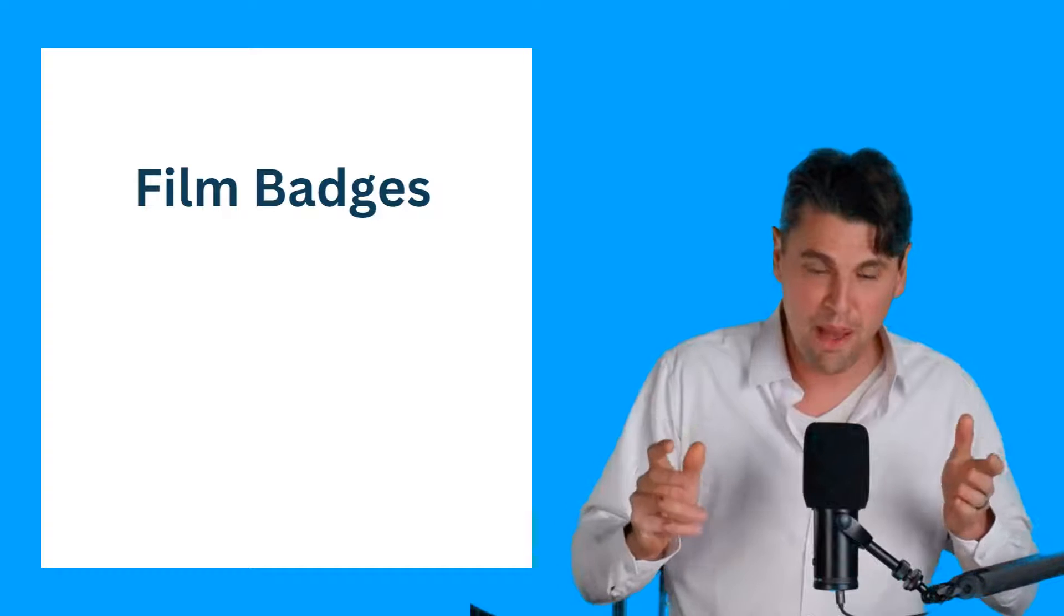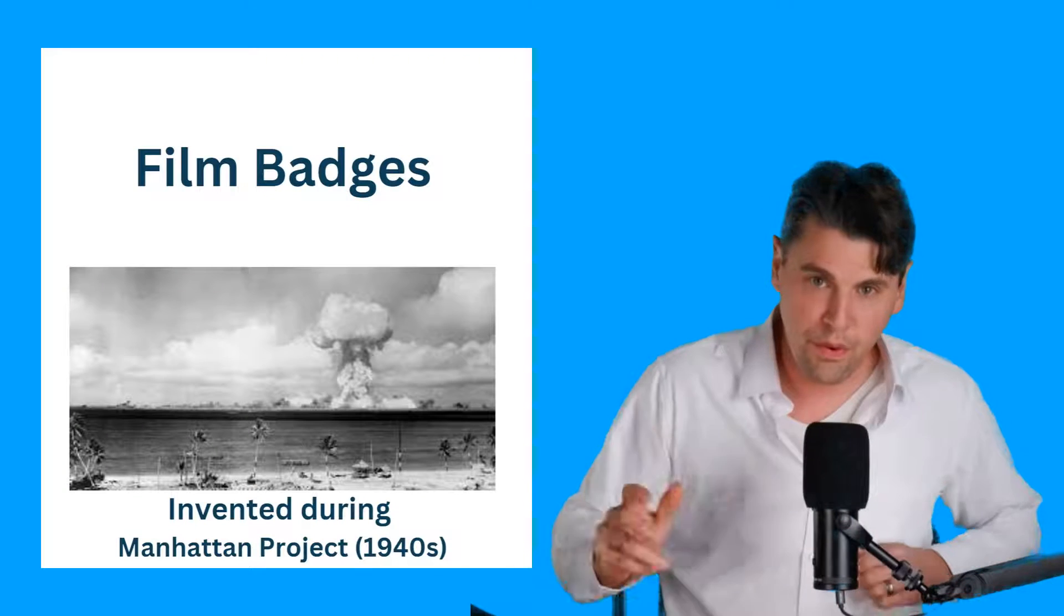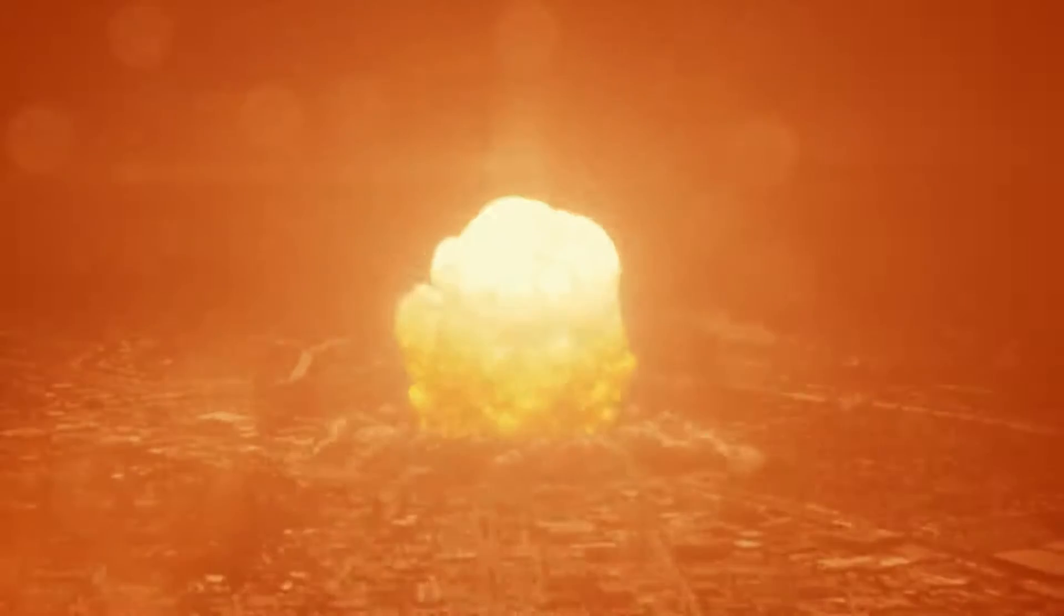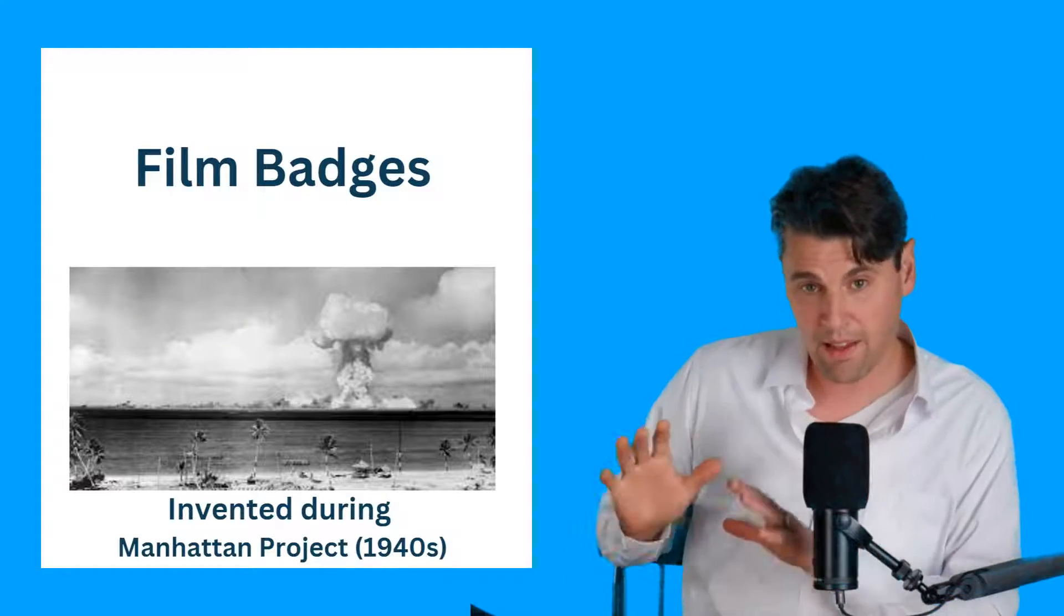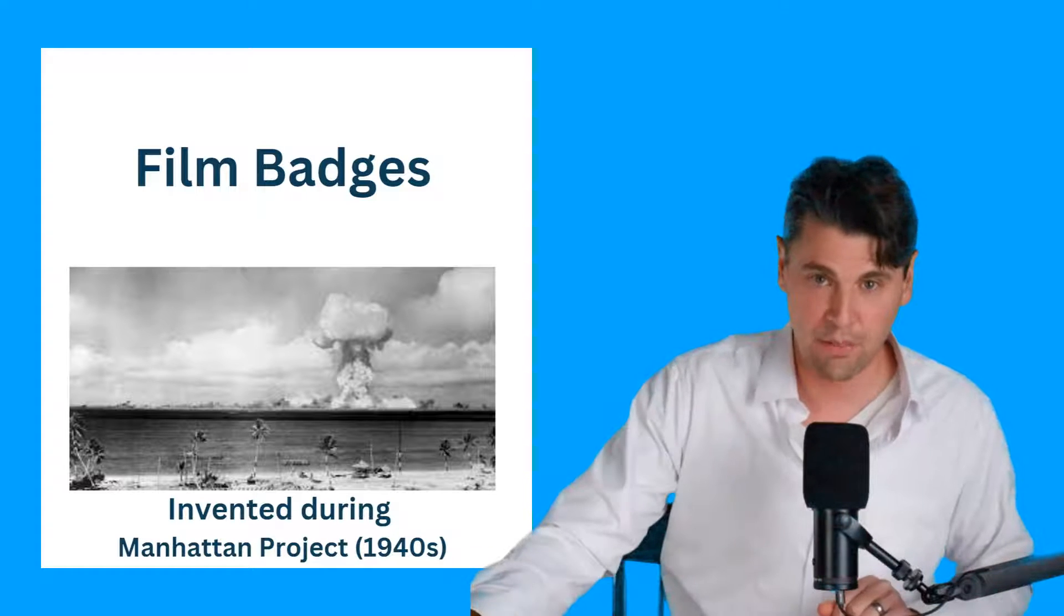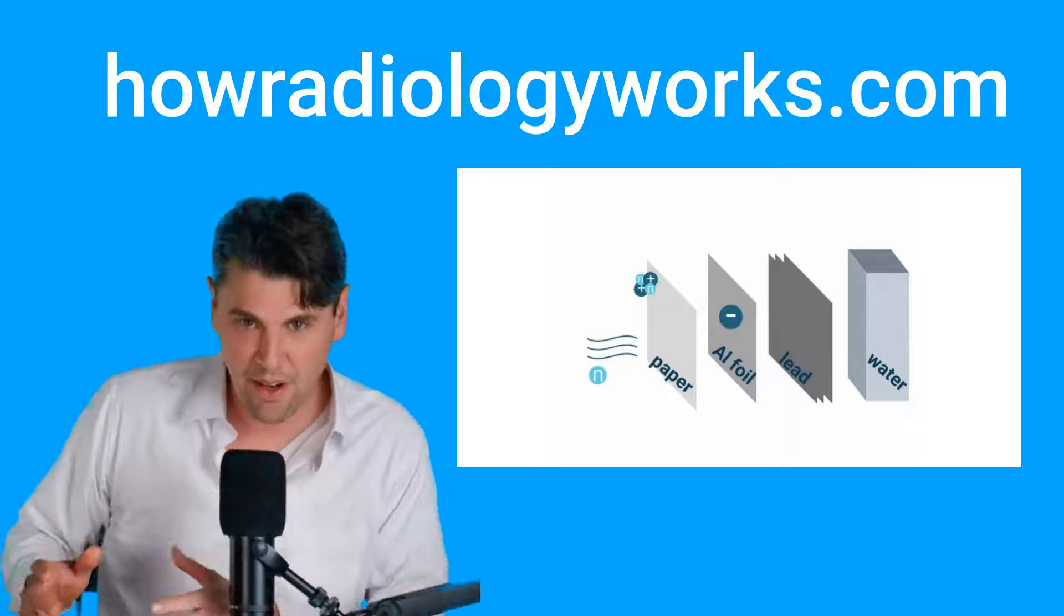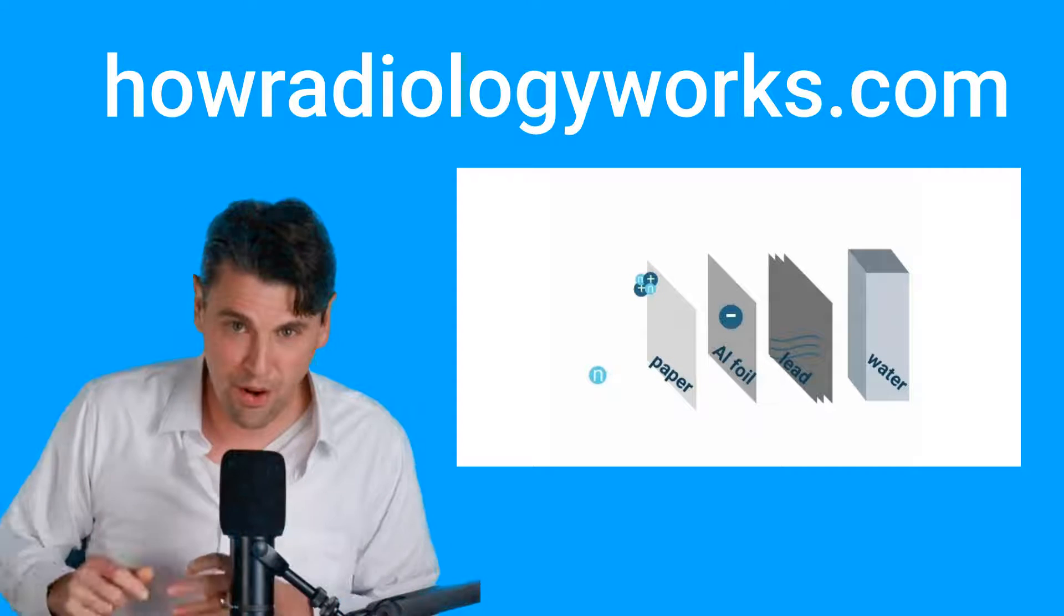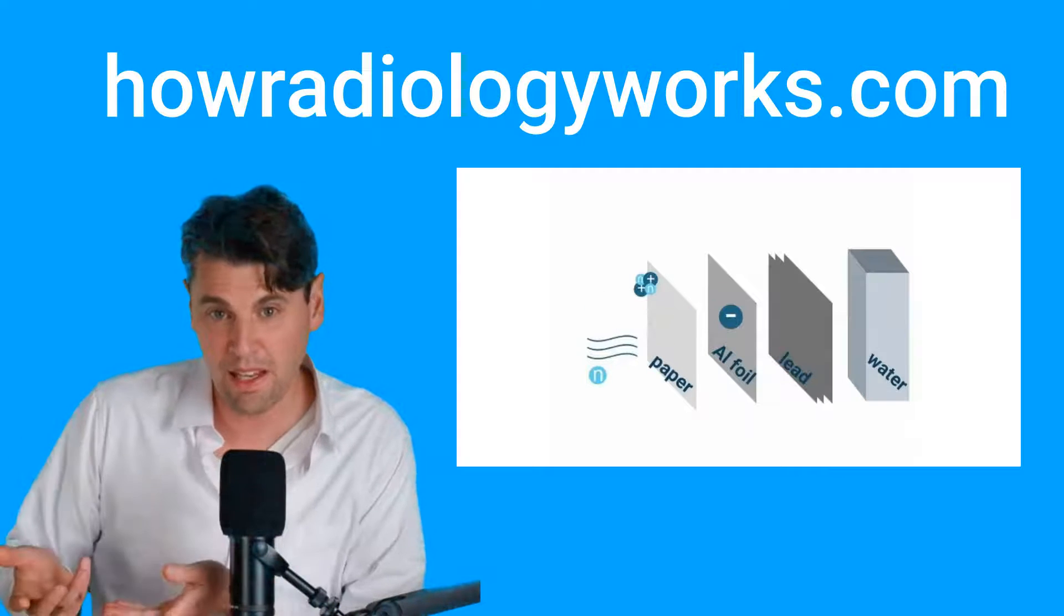First off, film badges. And you can use the knowledge that you have of how the imaging equipment works to actually relate to how these badges work. The film badges were actually invented during the Manhattan Project to give a way to actually track the radiation dose of the workers during the Manhattan Project as they were developing the nuclear bomb. So if you haven't seen our website, we've got several useful articles on our website. One of these articles is just about the different types of radiation.